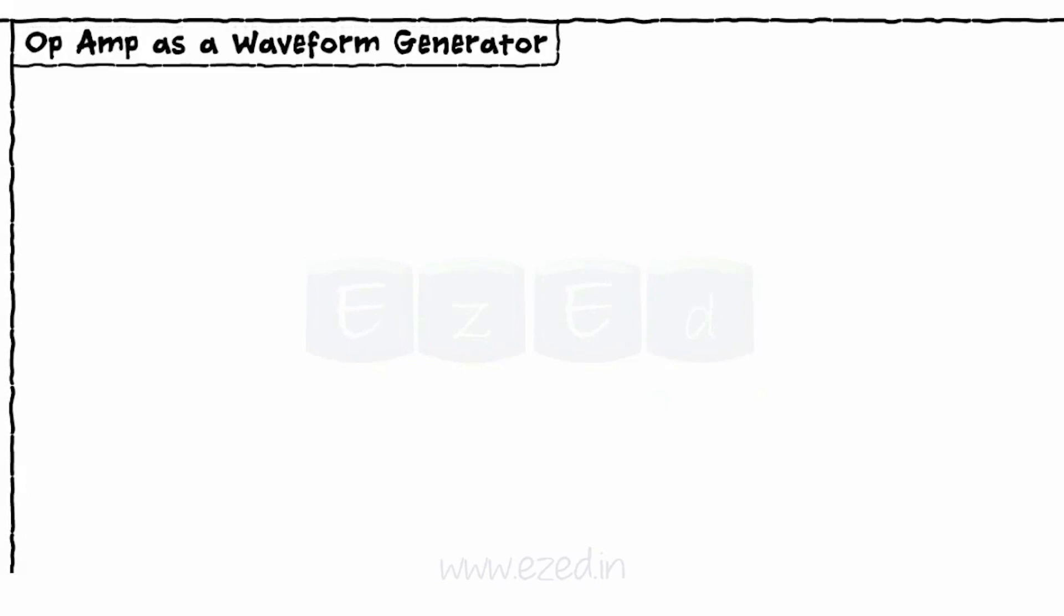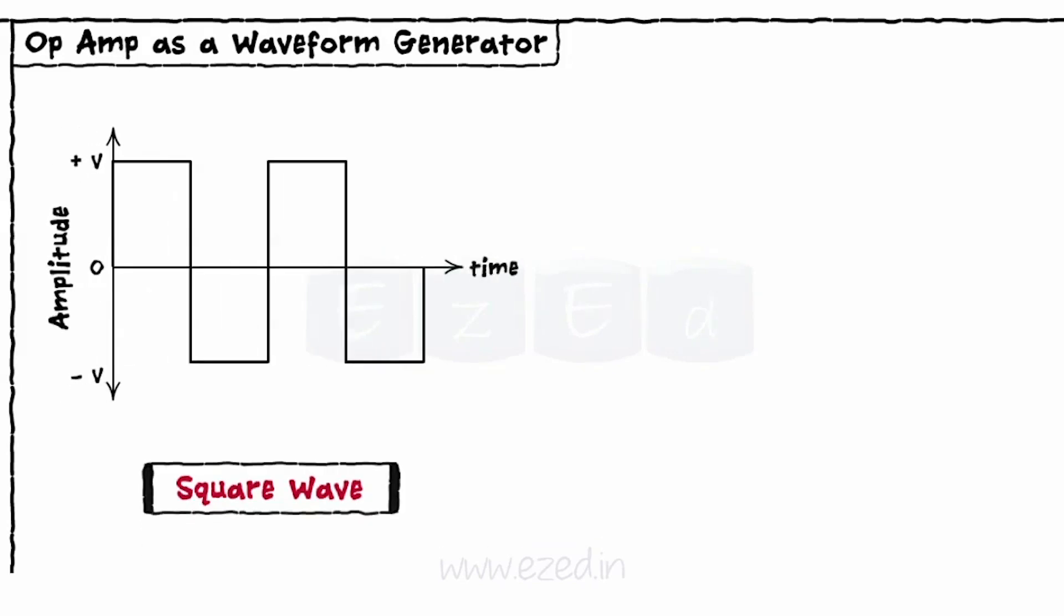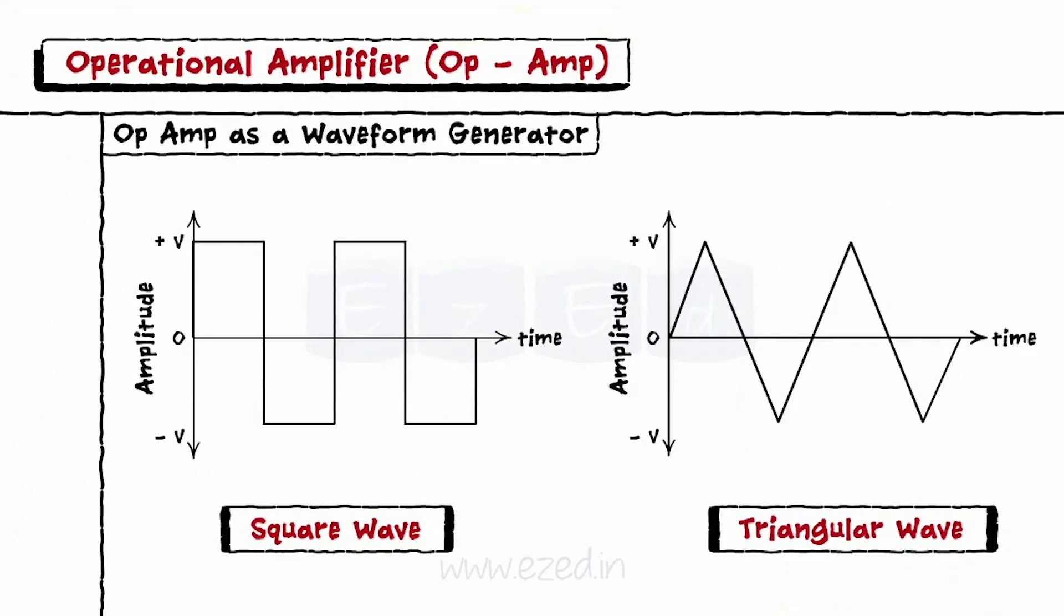An op-amp can also be used as a waveform generator. Here, it generates different waveforms such as a square wave, triangular wave, etc.